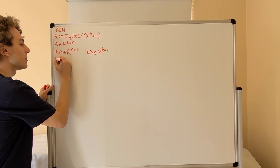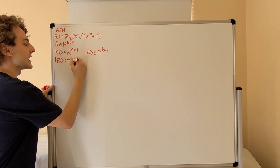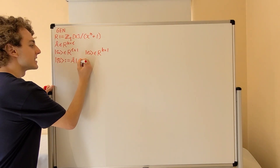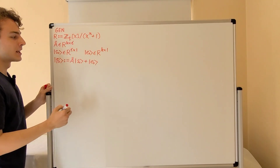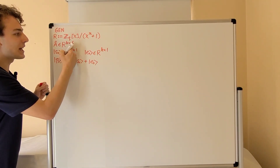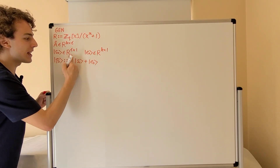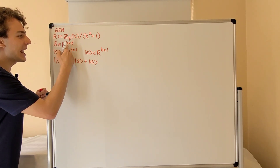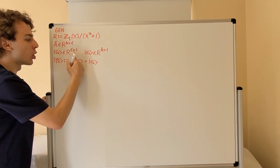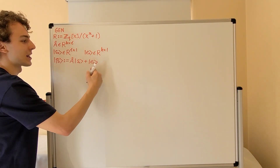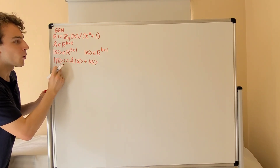Now let's define the public column vector P0. We can define this as A times S0 plus E0. So we are multiplying a k by l matrix and an l by 1 matrix. The result of that matrix multiplication gives us a k by 1 column vector. We can add this to the k by 1 error vector E0, and that gives us the public vector P0, which is a k by 1 column vector.